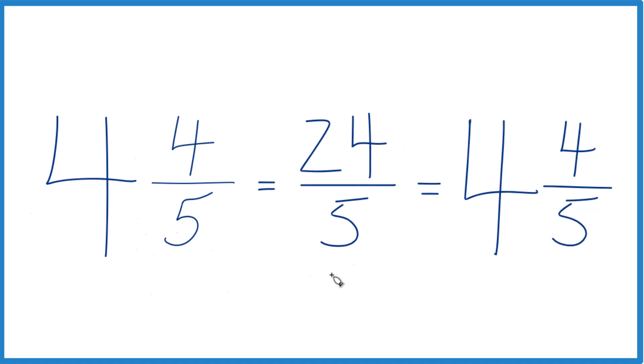It's just that we're representing this here as an improper fraction, and then 4 and 4 fifths, that's the mixed number we started out with.